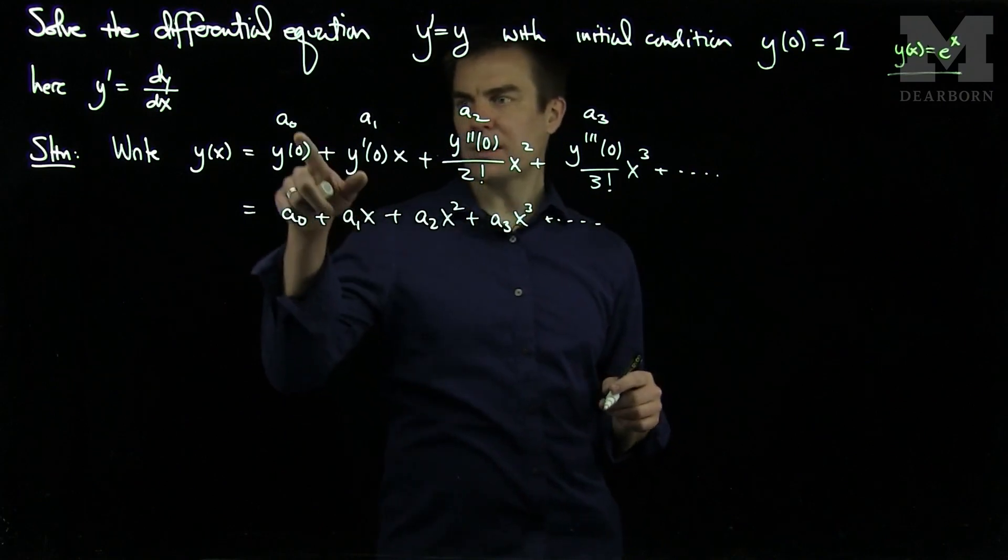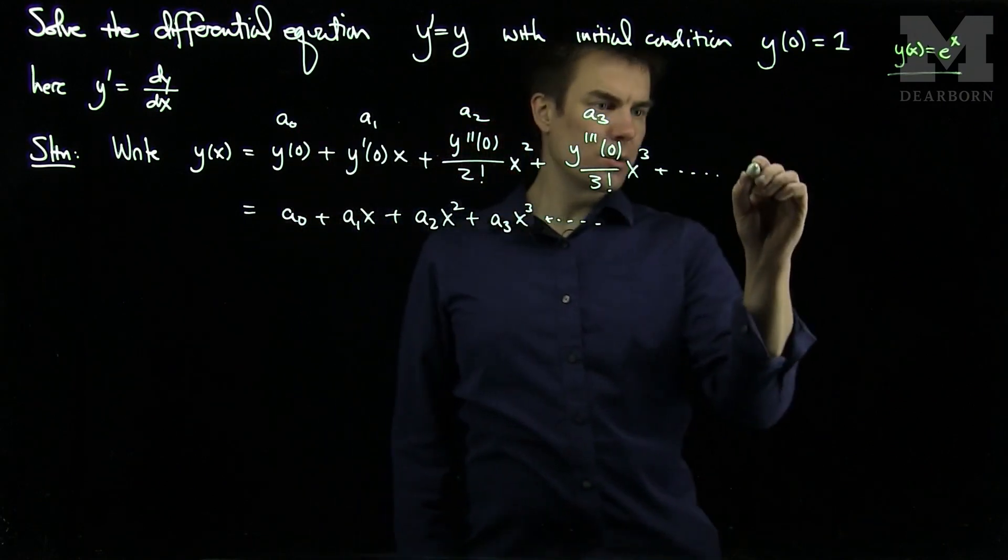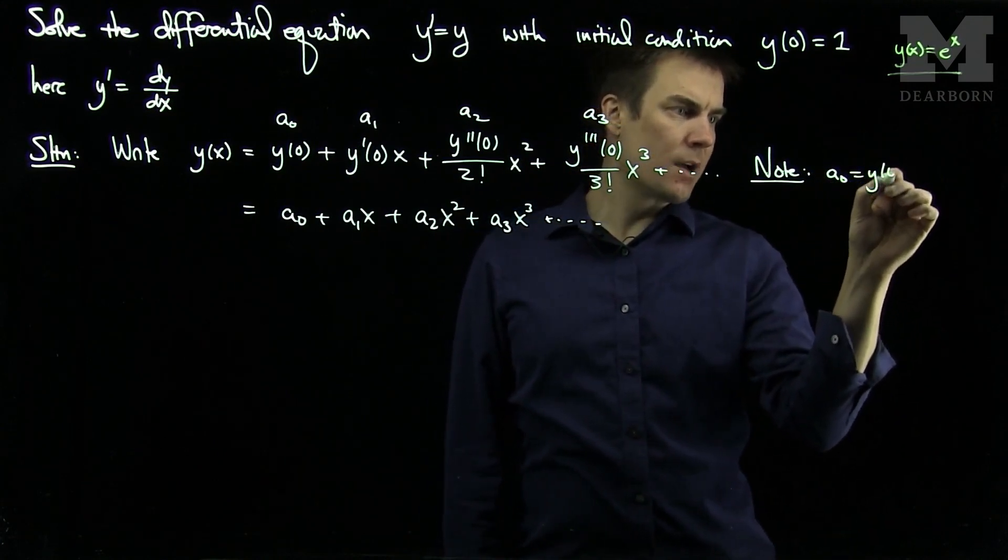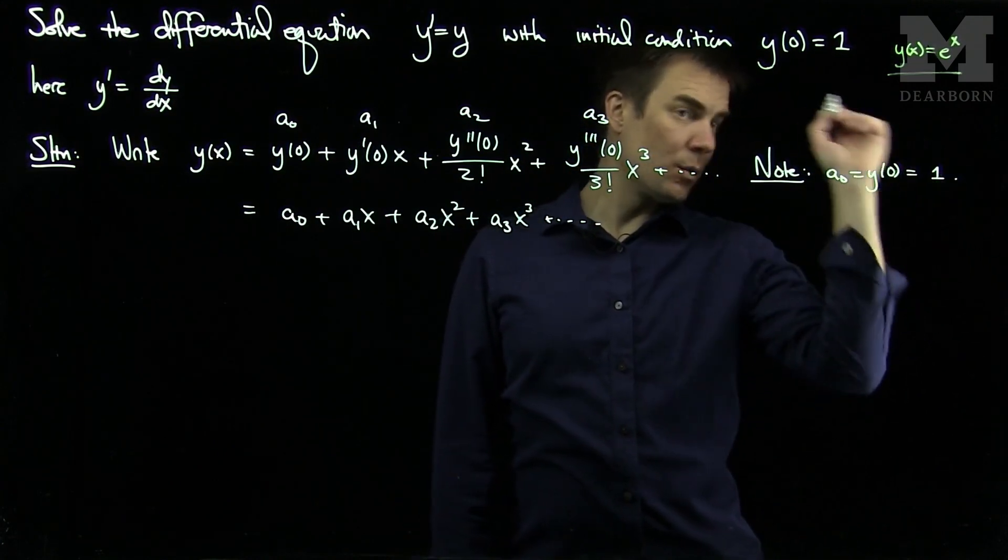We can note here that since a0 is y of 0, we can note that a0 is y of 0 and that is equal to 1.